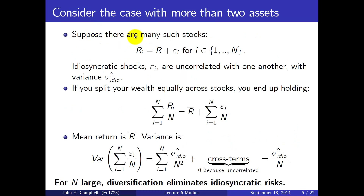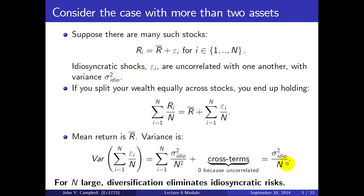Now let's think about the case where there are more than two assets. Suppose we have n stocks, each with the same mean and uncorrelated shocks. If you split your wealth equally across all n stocks, you get the mean return R-bar plus the average of all the shocks. The variance is the sum of idiosyncratic variances divided by n-squared — that's n times sigma-squared-idio divided by n-squared — which equals sigma-squared-idio divided by n. As n gets large, diversification eliminates all of the idiosyncratic risk.